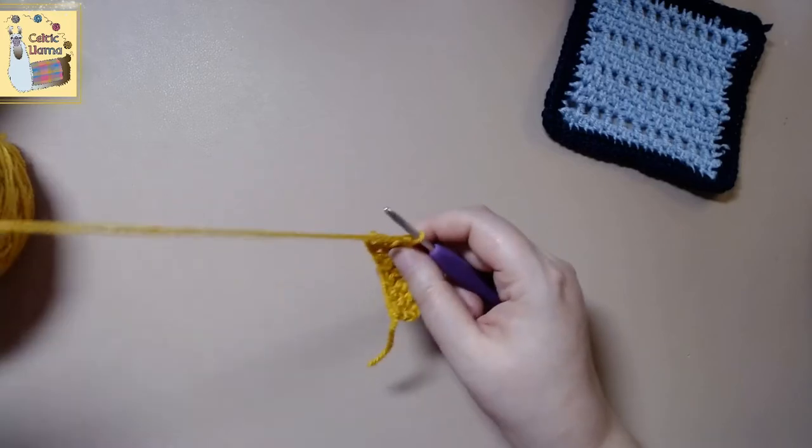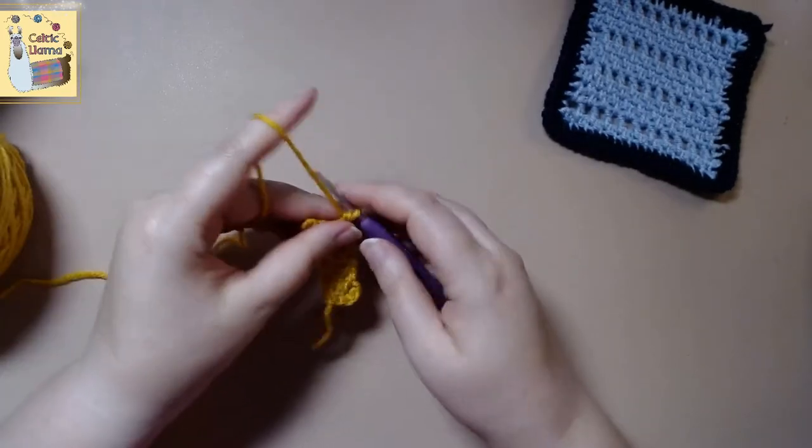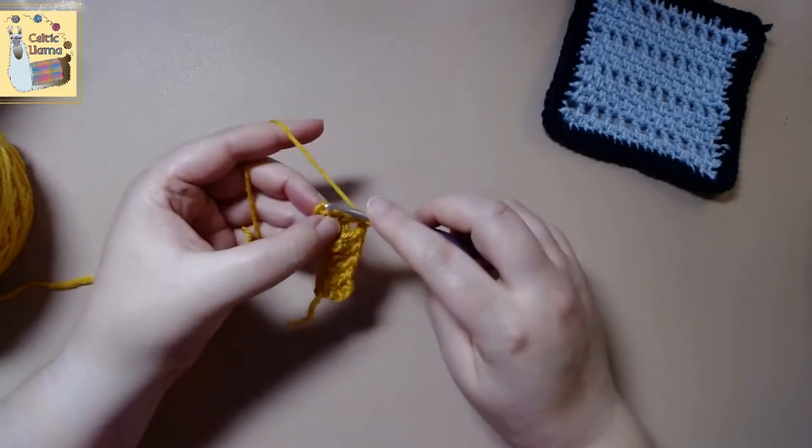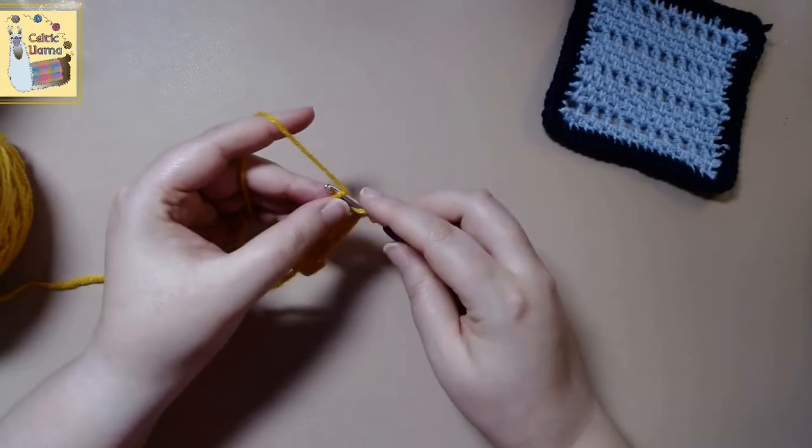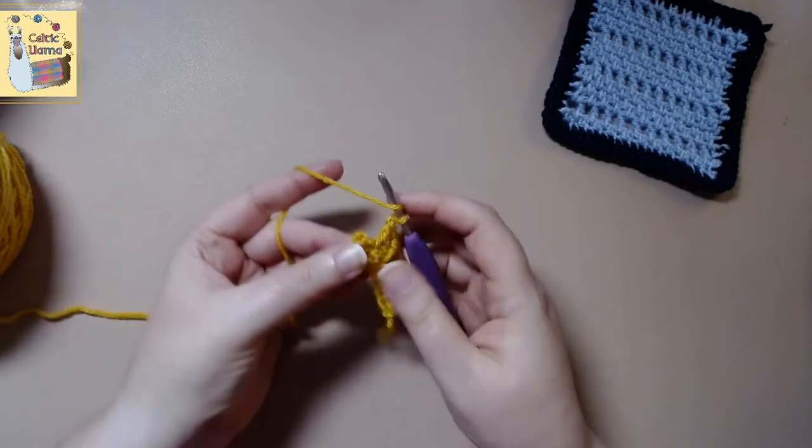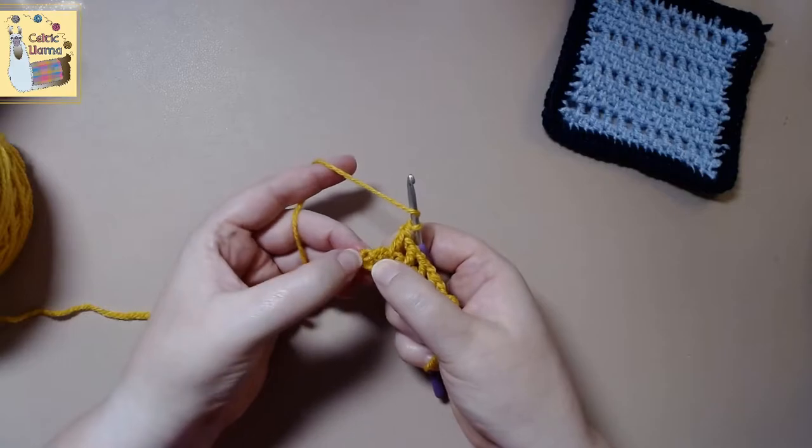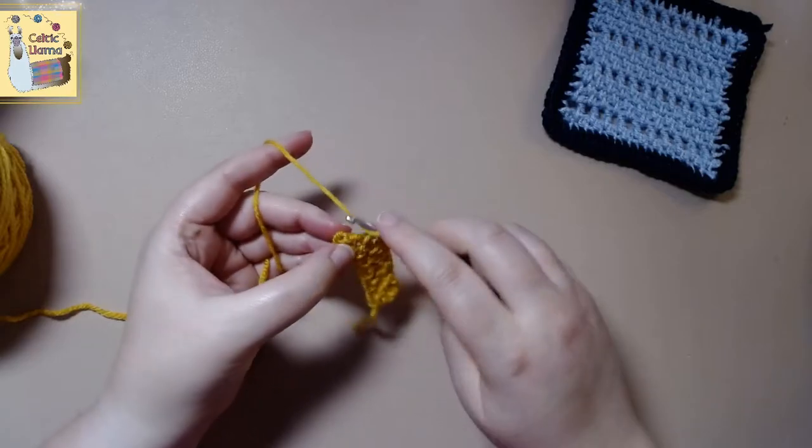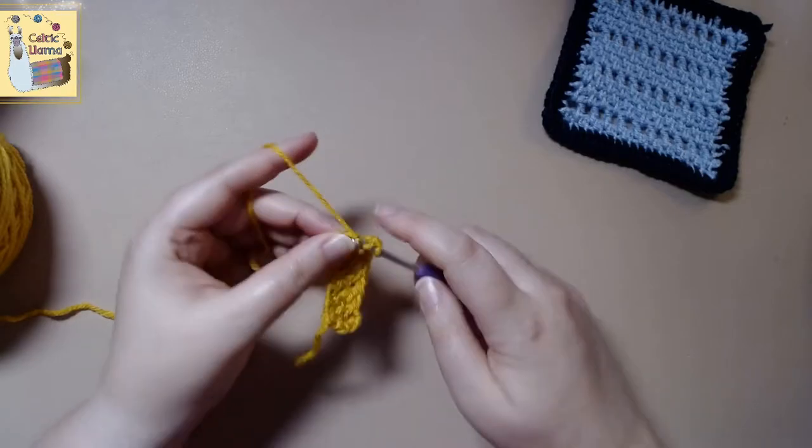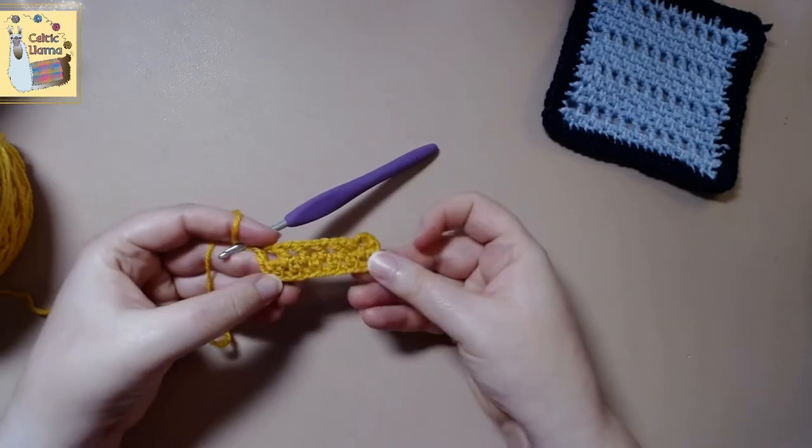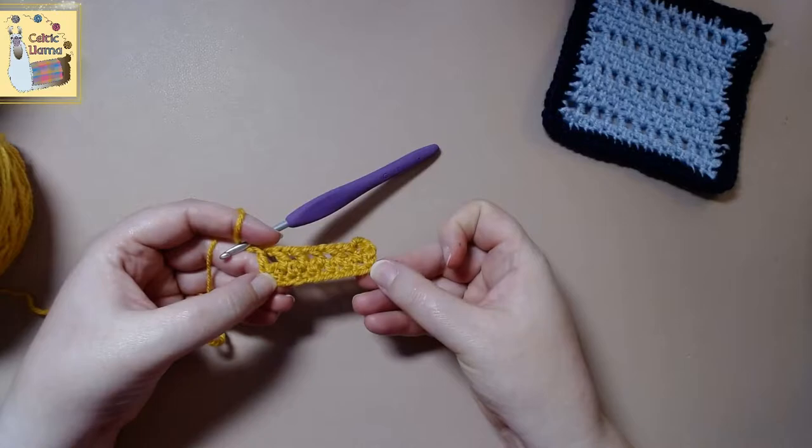So here we are at our last double crochet for this row. We're going to do it a little bit different. So we're going to do our chain one. But then we're going to go into the side of our work of our previous chain up. And the reason we're doing this onto the side is to give our side of our work a smoother surface. So you can kind of see how it's coming up.